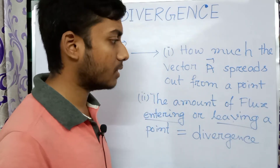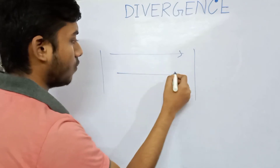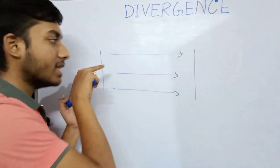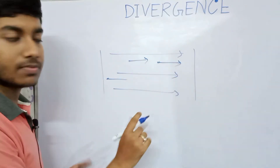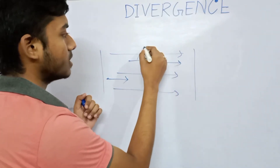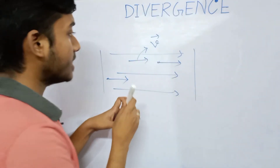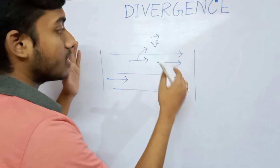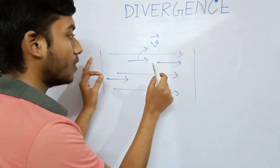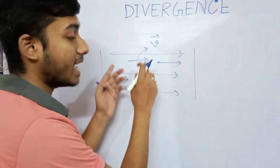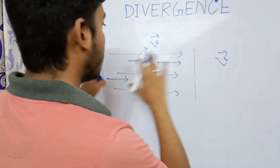We can take a simple example to understand it very clearly. Suppose we have a region of space and in this region water is flowing, suppose in this direction. Each water molecule has a velocity, represented by V vector. So we can say that in this region of space there is a vector field, and the vector field associates each water molecule with some kind of vector — here the vector is V, the velocity of the water molecules. This is the concept of vector field.